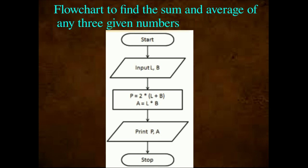Now we find the area and perimeter of a rectangle using a flowchart. Start — terminal symbol. Input L, B — input box using the rhombus symbol. Processing in the rectangular box: P equal to 2 into length plus breadth, and A equal to length into breadth. Then Print P, A — using the input-output box. Last: Stop. This is the algorithm and flowchart. The pictorial representation of an algorithm is known as a flowchart, whereas an algorithm is a step-by-step procedure to solve a problem.